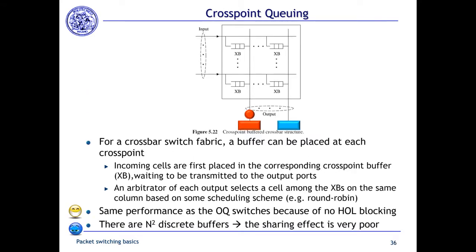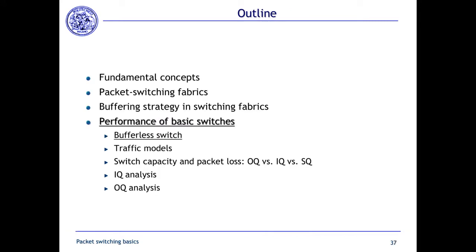This was a qualitative overview of the possibilities for designing the buffer architecture in a packet switching node. Now we are going to look at some performance results to compare the different architectures based on simple parameters like throughput, packet loss probability, and delay.